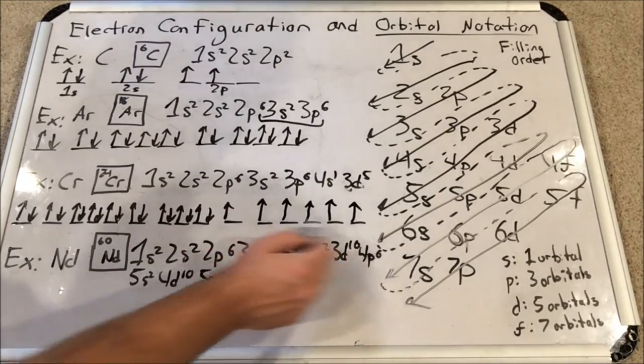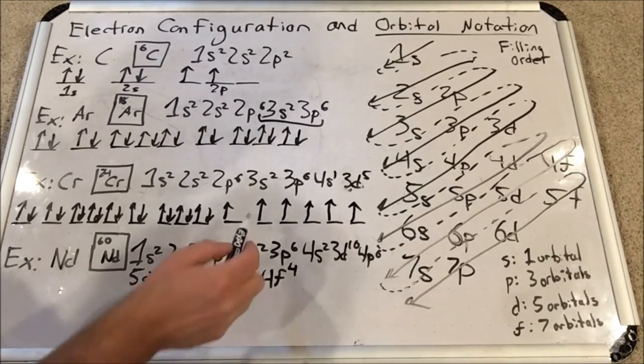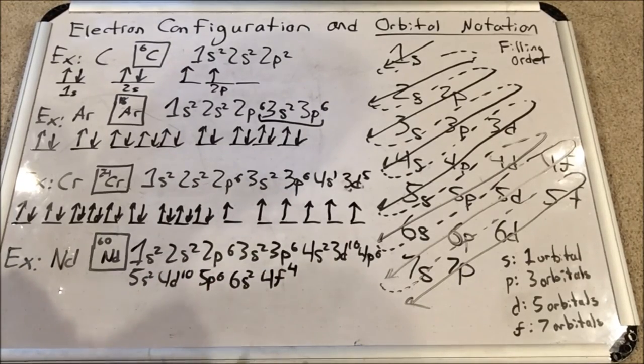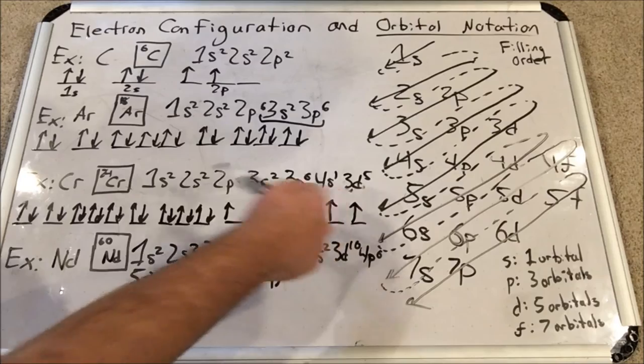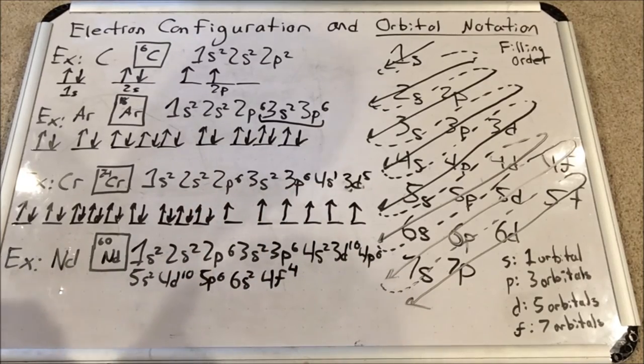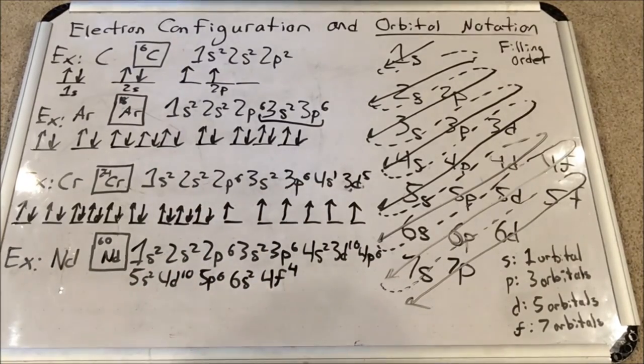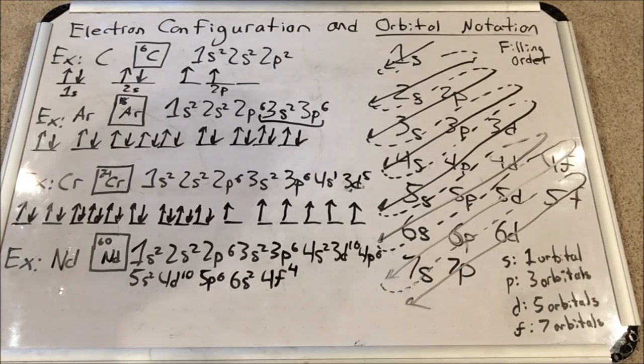I know that seems strange but this is how chromium does it. Notice how the d sublevel is exactly half filled, much more stable than if I put that electron back over here spin down.